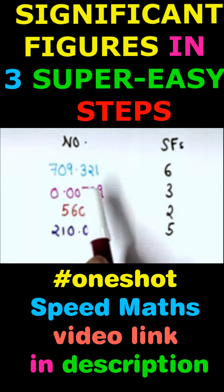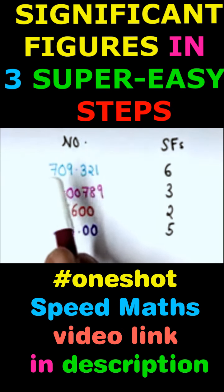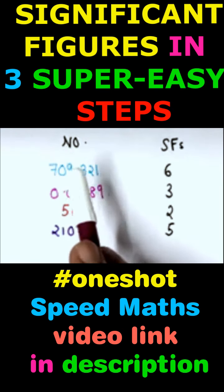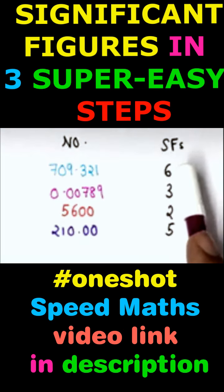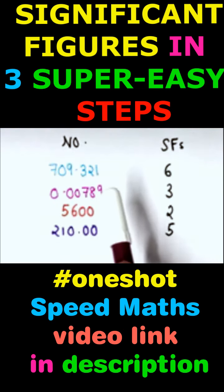Let's go to the first example: 709.321. This has 6 significant figures. Next, 0.00789 has 3 leading zeros and 3 non-zero digits, giving us 3 significant figures.